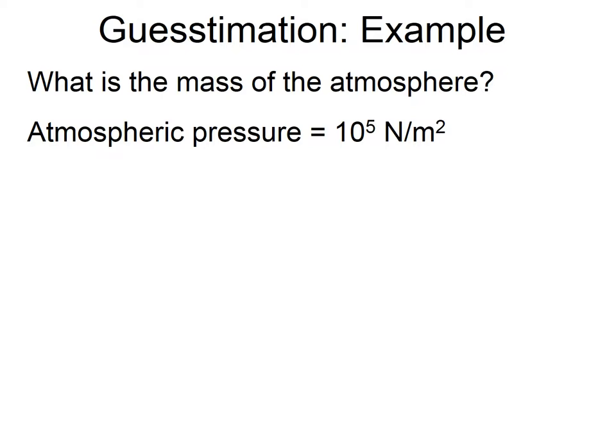If we wanted to work out the total mass of the atmosphere, we could work out the mass per meter squared and then multiply by the area of the earth. A newton is a unit of force, and force equals mass times acceleration. In this case the acceleration providing the force on the ground is the acceleration due to gravity, g. So force equals mass times g, and rearranging: mass equals force divided by gravity.